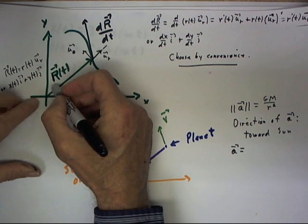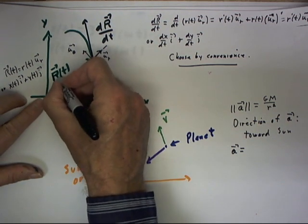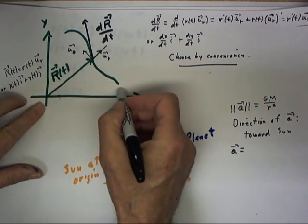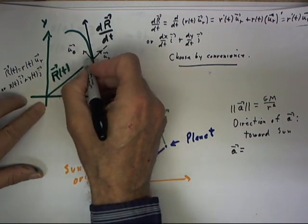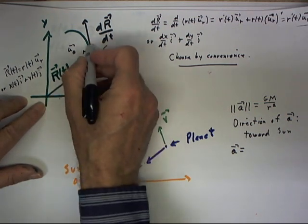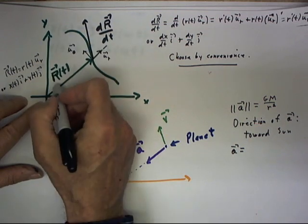Okay, we've seen that if we have a vector r of t over a given range of t values, the tip of that vector will typically trace out a curve.